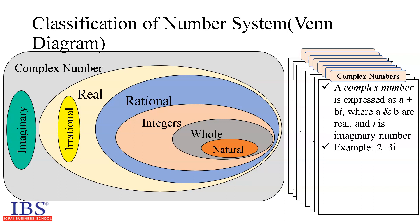As observed in the Venn diagram, the set of natural numbers is the smallest set of numbers, a subset of whole numbers. The set of whole numbers in turn is contained in the set of integers. The set of integers is a subset of the set of rational numbers. The set of rational and irrational numbers are subsets of real numbers. The set of complex numbers constitutes the superset of real and imaginary numbers.